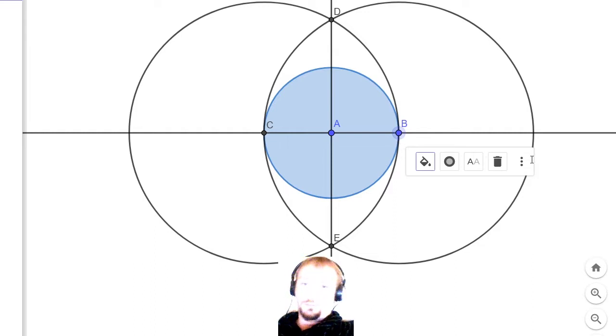Well, the next thing we need to do is we need to create a square around the earth. So we'll do this by creating points F and G where the earth circle intersects with the vertical line. Easy enough.